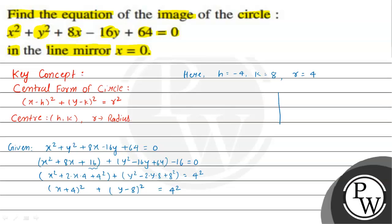On the xy-plane, the horizontal axis is the x-axis and the vertical axis is the y-axis. The given circle has its center at (-4, 8). So the center is 4 units on the negative x-axis and 8 units on the y-axis.